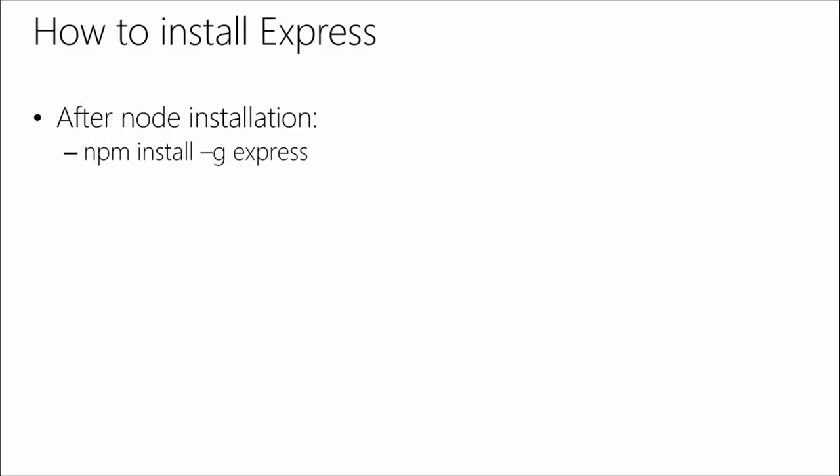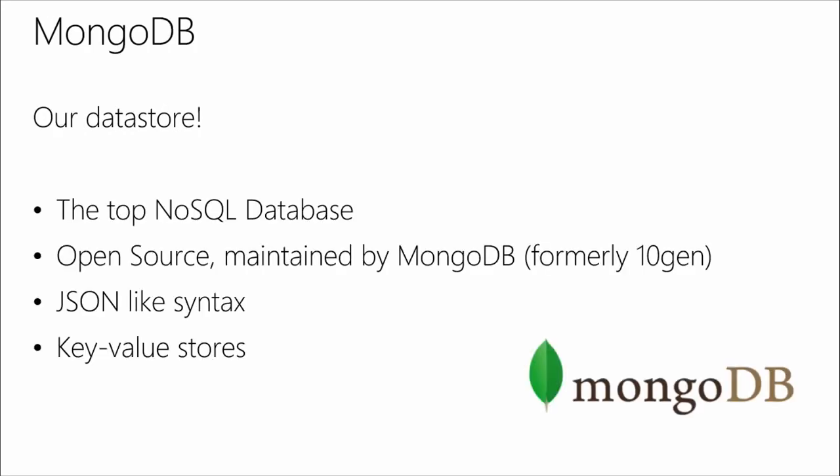Once you have Node installed, it's pretty easy — you just call the Package Manager and say you want to install Express. Next, MongoDB. This is what we're going to use for our data store, and it's the top NoSQL database out there. MongoDB just announced MongoDB 3, which is apparently like 95% faster. Mongo's already really, really fast and known for being extremely performant, but faster is always better.